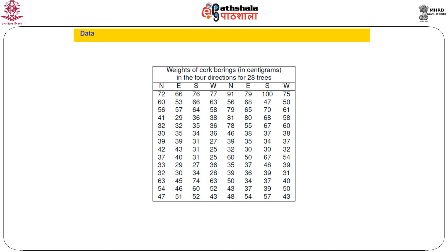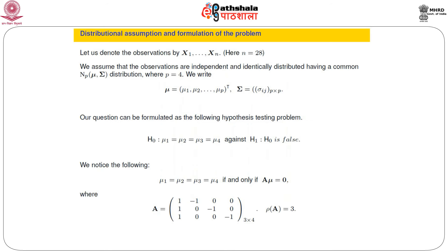We formulate the question as a hypothesis testing problem: all μᵢ's are the same, i.e., μ₁ = μ₂ = μ₃ = μ₄. We can write this as a matrix equation: capital A pre-multiplied by μ equals 0, where A is a 3×4 matrix. Post-multiplying A by (μ₁, μ₂, μ₃, μ₄)' gives (μ₁ − μ₂, μ₁ − μ₃, μ₁ − μ₄)', which equals 0 if and only if all μᵢ's are equal.